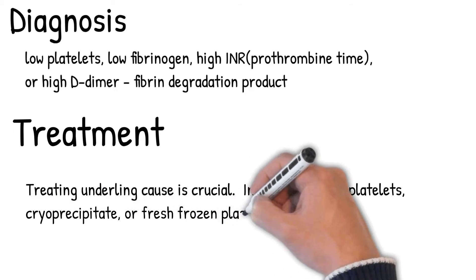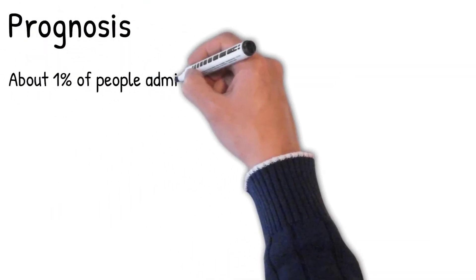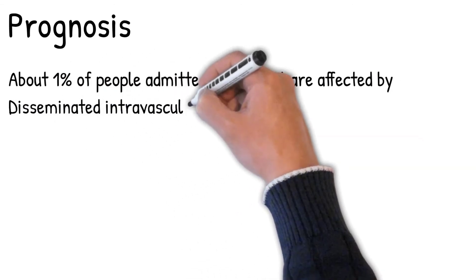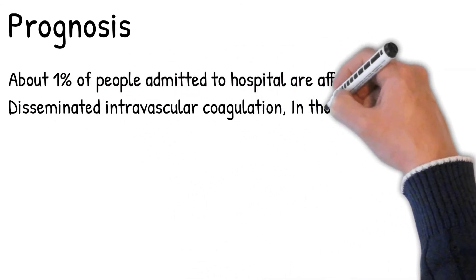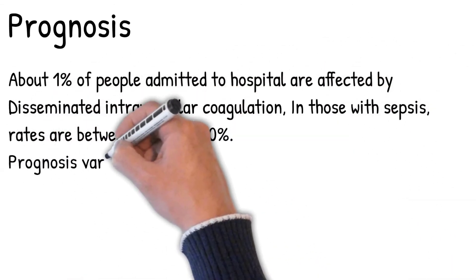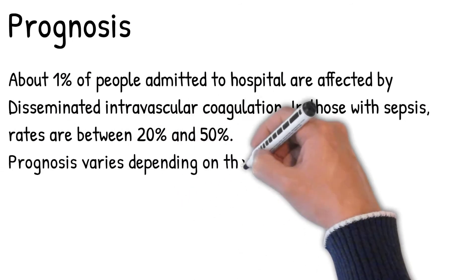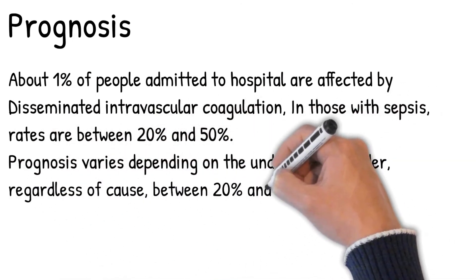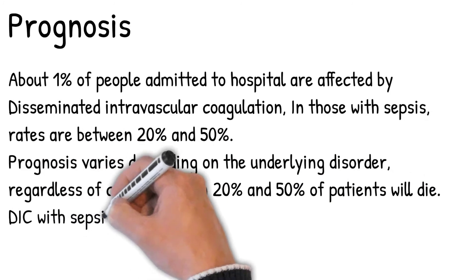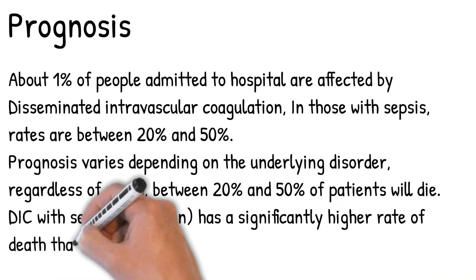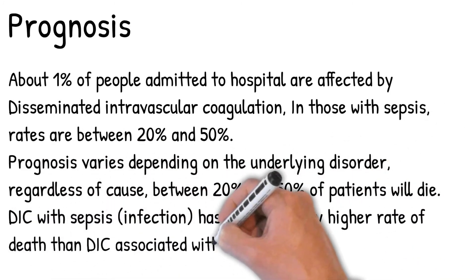About 1% of people admitted to hospital are affected by disseminated intravascular coagulation; in those with sepsis, rates are between 20% and 50%. Prognosis varies depending on the underlying disorder, but regardless of cause, between 20% and 50% of patients will die. DIC with sepsis or infection has a significantly higher rate of death than DIC associated with trauma.